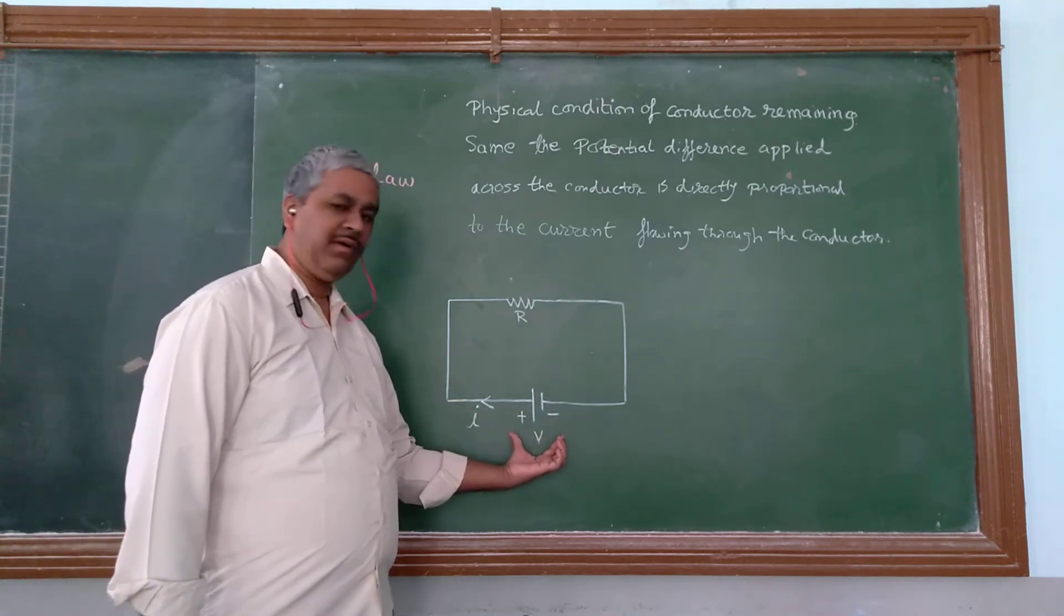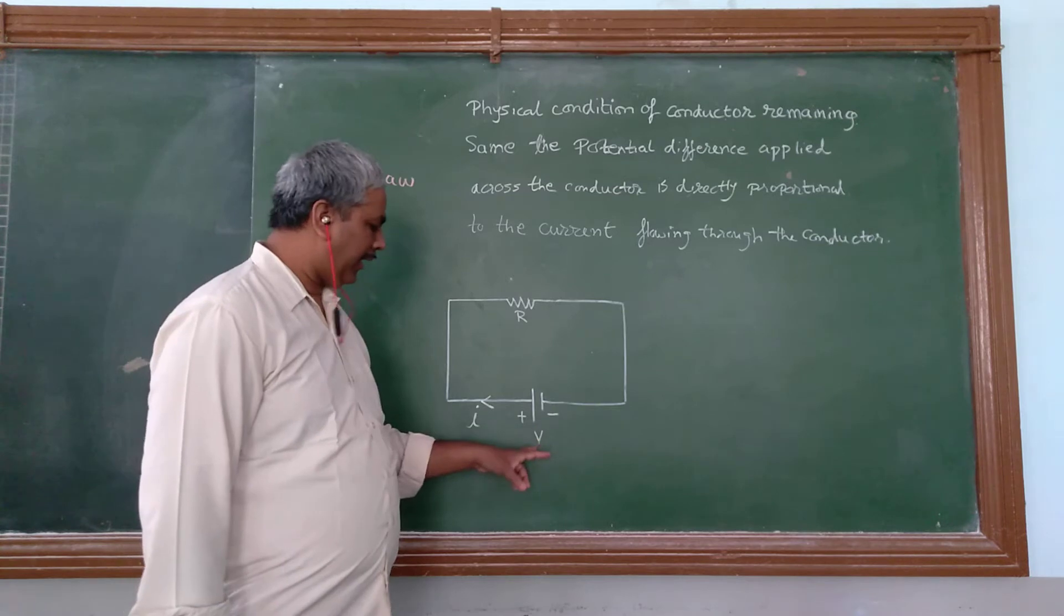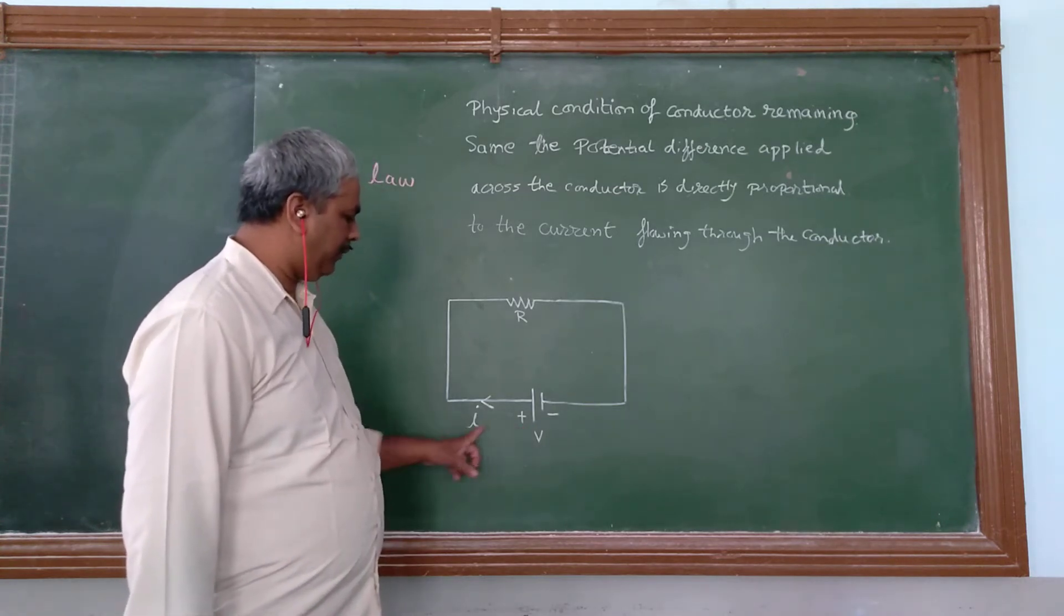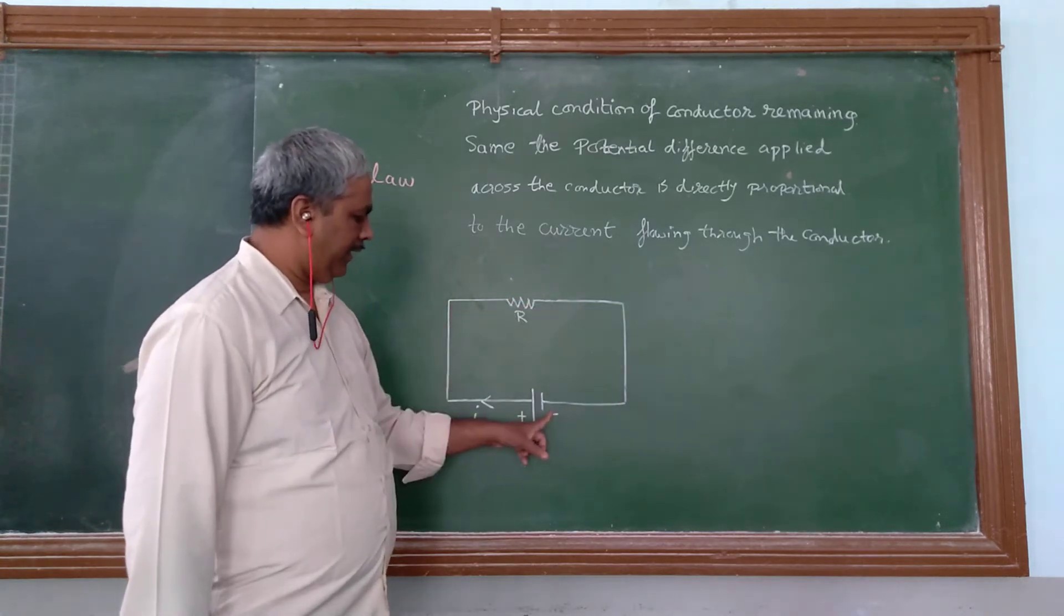In the circuit diagram, we should have a battery. The battery has a potential difference, say V. The current is going to move from positive terminal to the negative terminal.